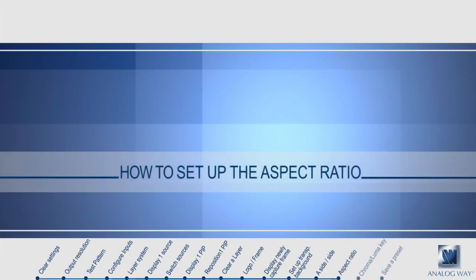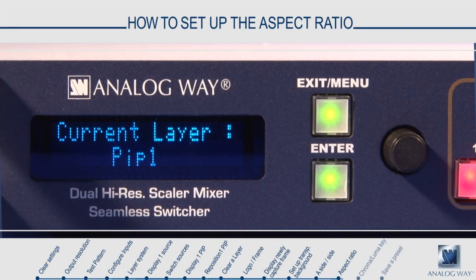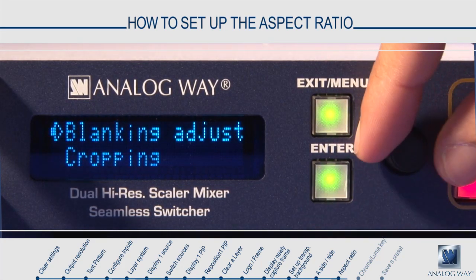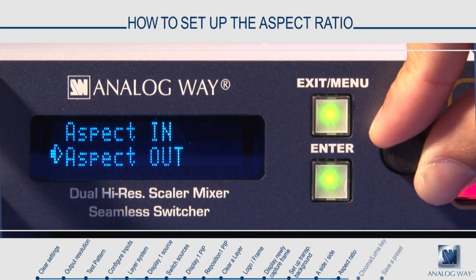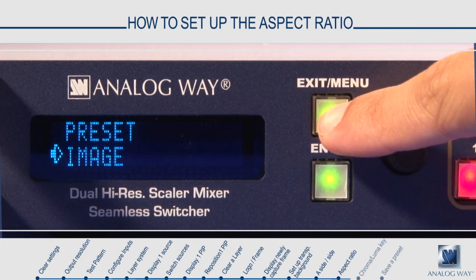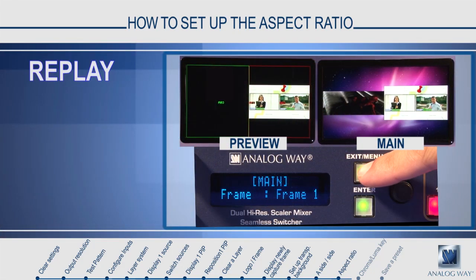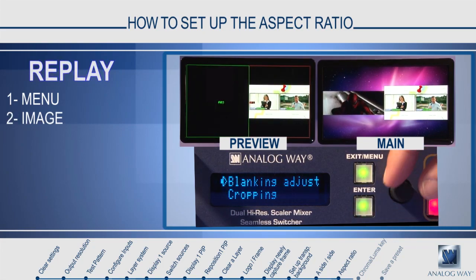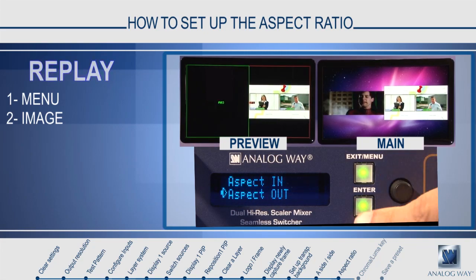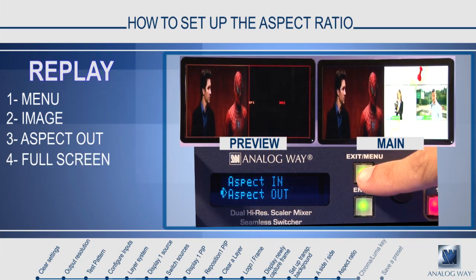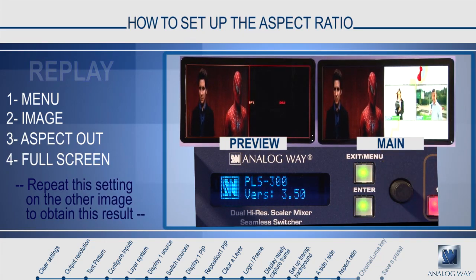How to set up the aspect ratio. To set up the aspect ratio, navigate in the menu to Image. In the Image menu, select Aspect Out. You now have a choice of centered, cropped, full screen, or one-to-one. This chooses how the source is displayed in the layer. By default the Aspect Out setting is centered, which will display your source as large as possible inside the available window without disturbing the aspect ratio. You can choose cropped to display the source as big as possible with the correct aspect ratio but cropping the remaining portions. Or you can display it full screen, where the source will be stretched to fit the available layer.